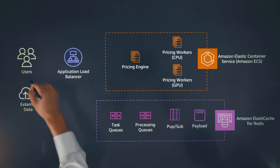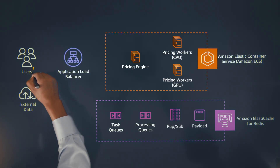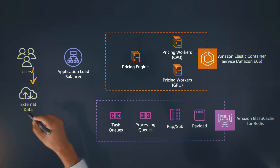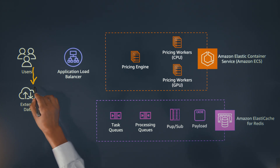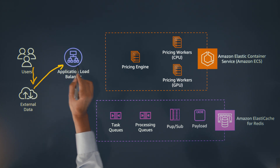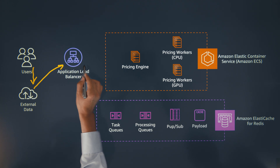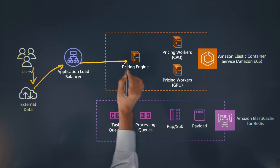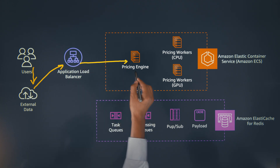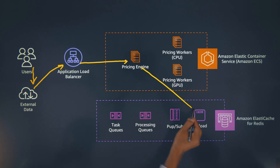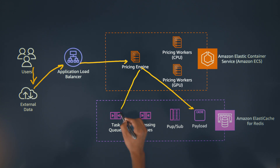So how do the traders interact with the application? The traders will initially trigger the pricing from DBS's internal trading platform, taking the external data to the application load balancer. The application load balancer will further route traffic into the pricing engine. The pricing engine will store the accurate payload into Redis and get that job ID stored in the task queue.